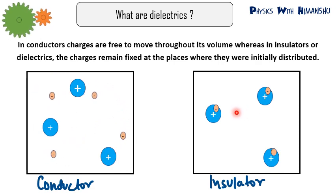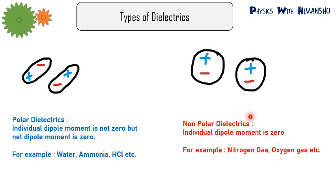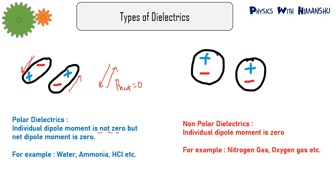Dielectrics are basically of two types: polar dielectrics and non-polar dielectrics. In polar dielectrics, each atom has a net individual dipole moment, but the net dipole moment of the whole material is zero because the individual dipole moments cancel out. In non-polar dielectrics, the individual dipole moment of each atom is already zero.